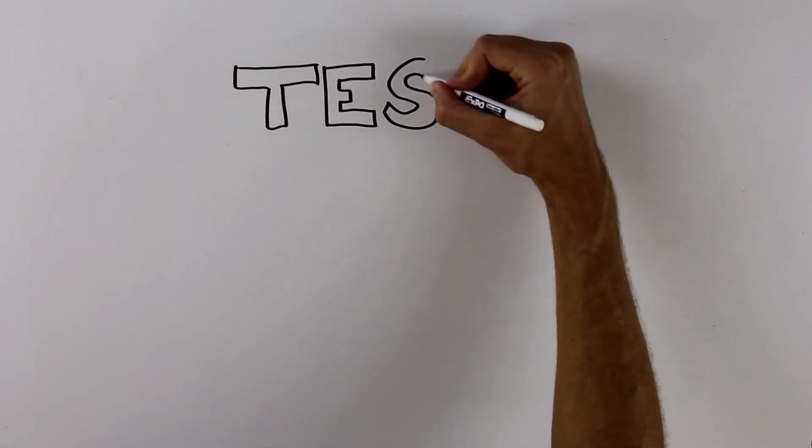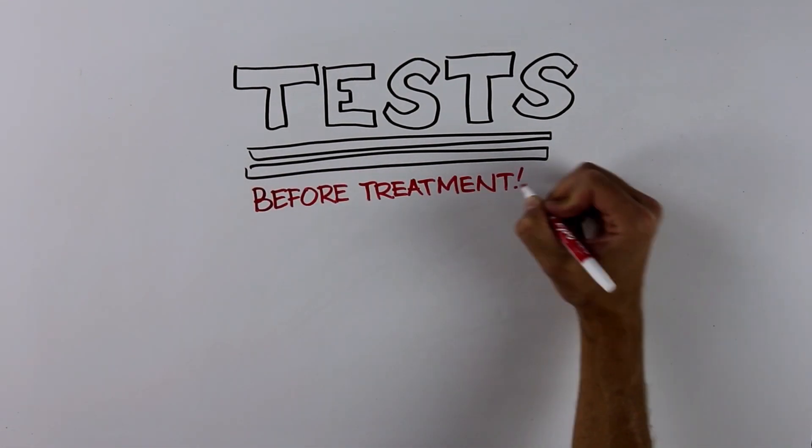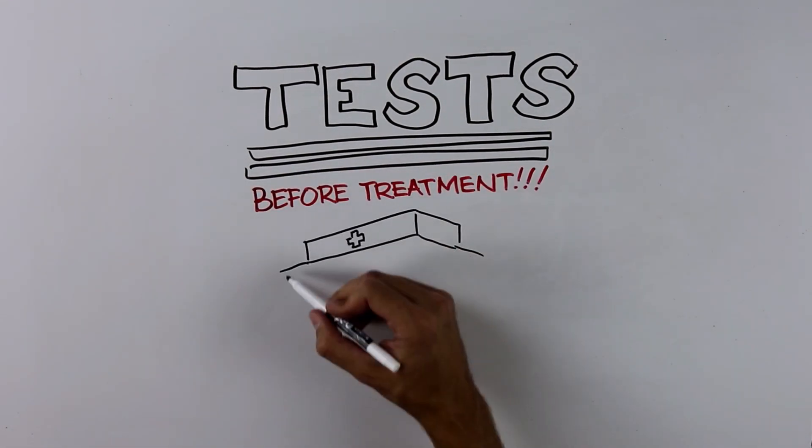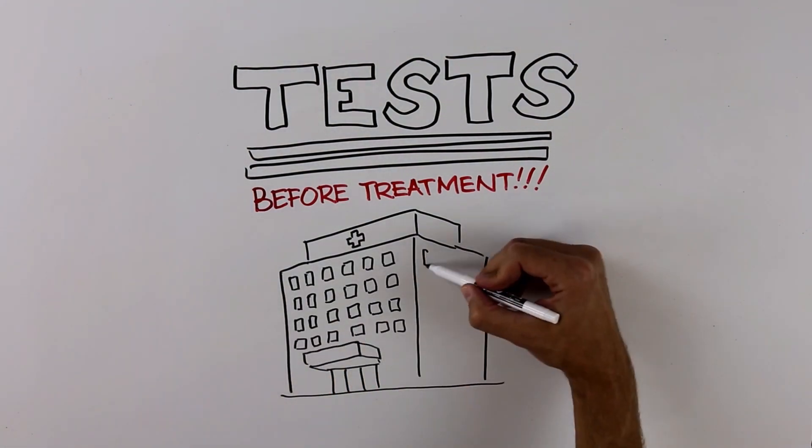Getting the right tests at the beginning of diagnosis is absolutely critical, because once treatment starts, the treatment kills the myeloma cells where these features reside. And to fight the enemy, you need to know as much about it as possible.